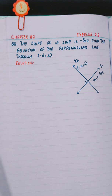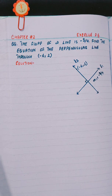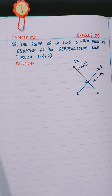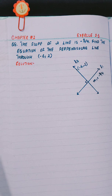Hello everyone, this is Rabia Aslam. In this video, we will solve question number 8 from exercise 2.5, chapter number 2. The slope of a line is minus 3 by 4. Find the equation of the perpendicular line through minus 6, 2.